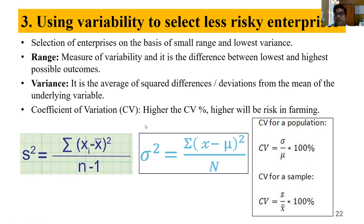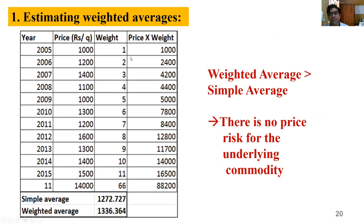CV (Coefficient of Variation) is nothing but: standard deviation (sigma) divided by mean (x-bar), multiplied by 100. Sigma squared is variance; the square root of variance is standard deviation. For population: (sigma / mean) × 100. For sample: (s / x-bar) × 100. Higher the percentage of CV, higher is the risk. To measure risk using these three methods: (1) weighted price average vs. simple price average — if weighted average is more, no price risk; (2) expected yield vs. average yield — if expected yield is more, no yield risk; (3) select enterprises with lowest range, lowest variance, and lowest CV.